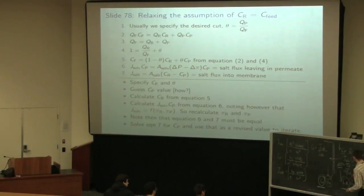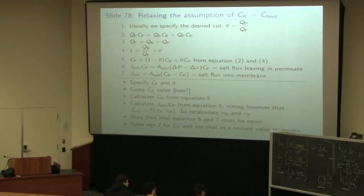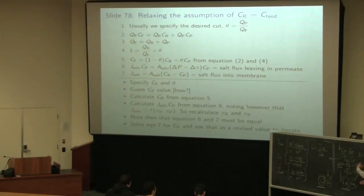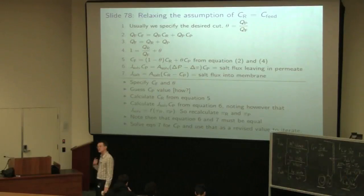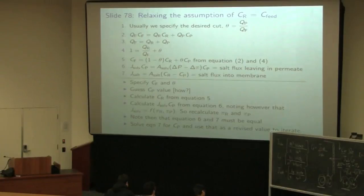You can calculate pi_r and pi_p individually. The main driver is pi_r. Pi_p is a very small back osmotic pressure - if anything, ignoring it means you're being conservative, because pi_p works in your favor. Pi_r is the one counteracting the applied pressure drop. If you have any questions about membranes, feel free to email me if something is unclear.